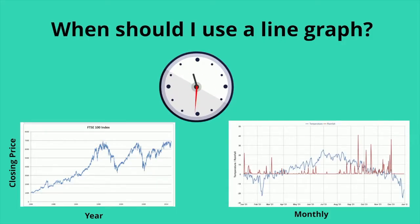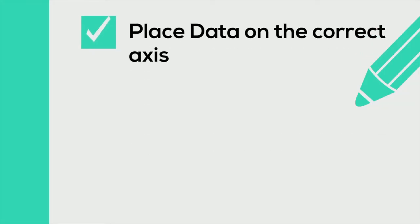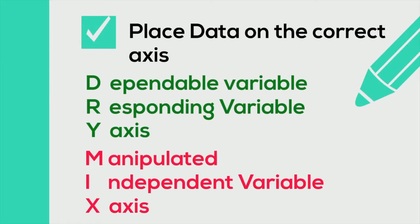Let's follow these steps. First, place the data on the correct axis. You can use DRY MIX to help you remember this. D stands for dependent, also called the responding variable, and it goes on the y-axis. M is the manipulated variable, also called the independent variable, and it goes on the x-axis.